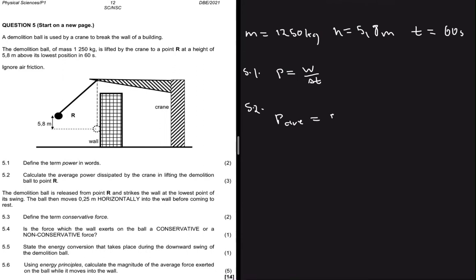Power average is given as force multiplied by velocity average. So what this question wants us to do is to determine the force, determine the velocity average, and then we have the power average. The domain knowledge of a crane is that it moves at constant speed or constant velocity.